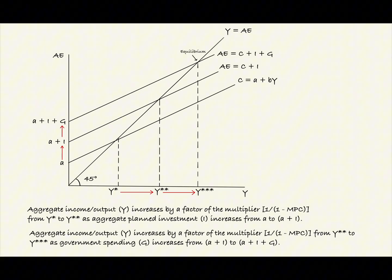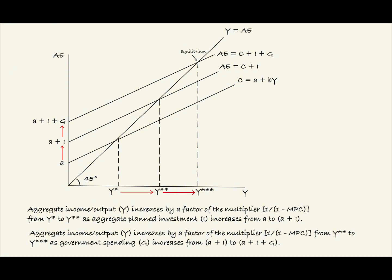Here we can see the aggregate consumption line, represented by C equals A plus BY. Above the aggregate consumption line, we can see two aggregate expenditure lines. The one directly above has aggregate expenditures equaling C plus I, which is aggregate consumption plus planned investment. Above that, AE equals C plus I plus G, or aggregate expenditures equals aggregate consumption plus planned investment plus government spending. To find equilibrium, we need to find the intersection of each of these lines with the line of Y equals AE, because equilibrium is found where Y, aggregate income or output, equals AE, aggregate expenditure.